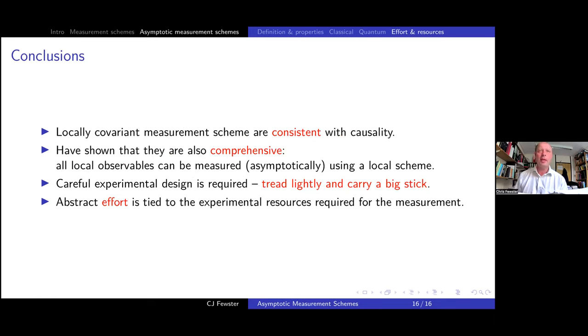So I come to the conclusions. It was already known that the locally covariant measurement scheme is consistent with causality. And what I've shown here, at least in one model, is that this is a comprehensive framework for measurement as well. All local observables can be measured, at least asymptotically, using local schemes. You have to be careful how you design the experiment. That doesn't sound so surprising. And in our case, the slogan is to tread lightly and carry a big stick because we are turning down the coupling and increasing the size of these test functions. And finally, the abstract effort measure that I was discussing is tied to experimental resources needed for the measurement. And with that, I will conclude. Thank you for your attention.